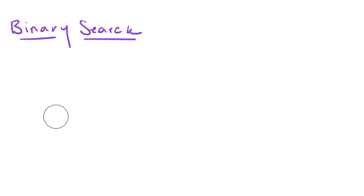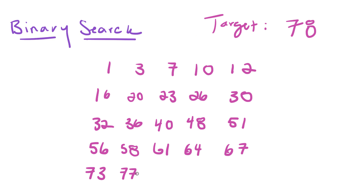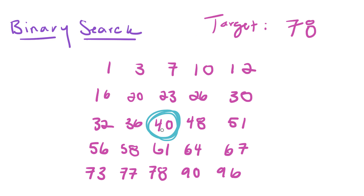Now that we have the basic example down, let's do something more complicated with more numbers. Our target is going to be 78. I've made a list of around 30 numbers. The first thing we do is find the middle number of the array, then compare it with our target, 78.